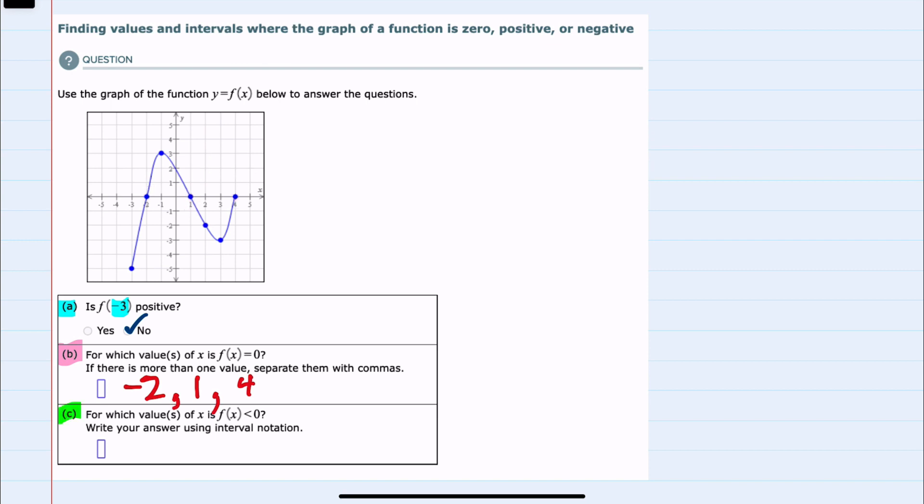And then for part C, we're asked for which values of x is f(x) less than zero? f(x) being our y values. So our y values are less than zero over this stretch, and then again on this stretch. So for which values does this happen? This happens between negative 3 and negative 2 for our x values, so the interval negative 3 to negative 2. I'm going to include negative 3 since it's a solid dot.